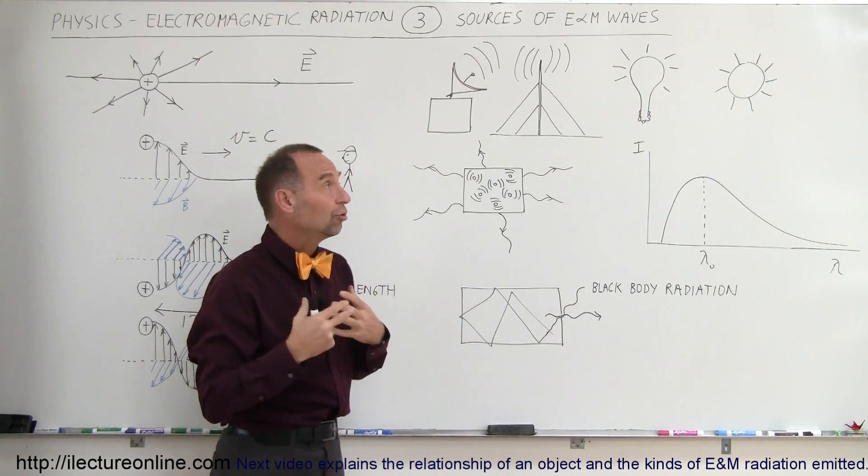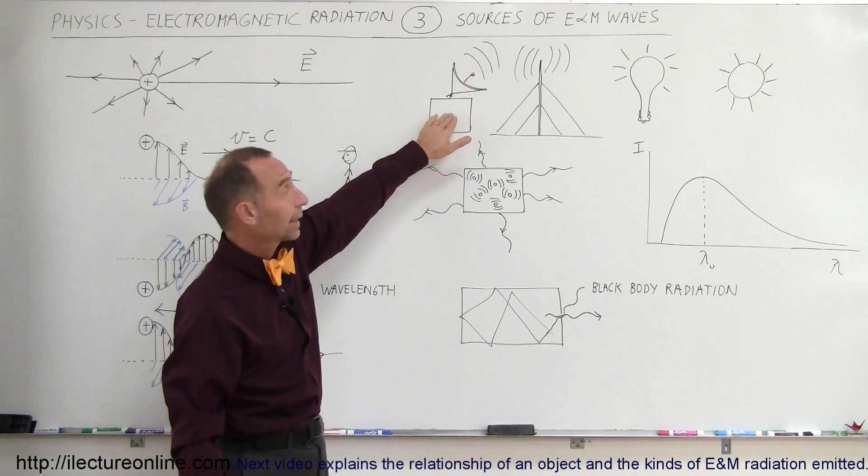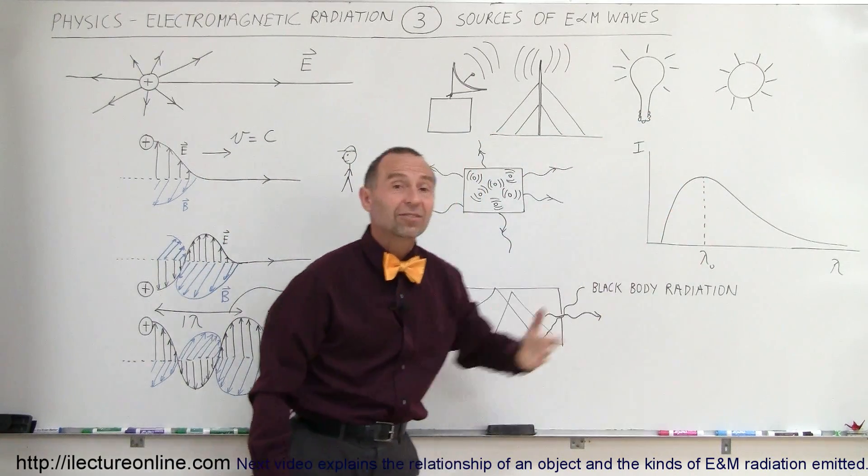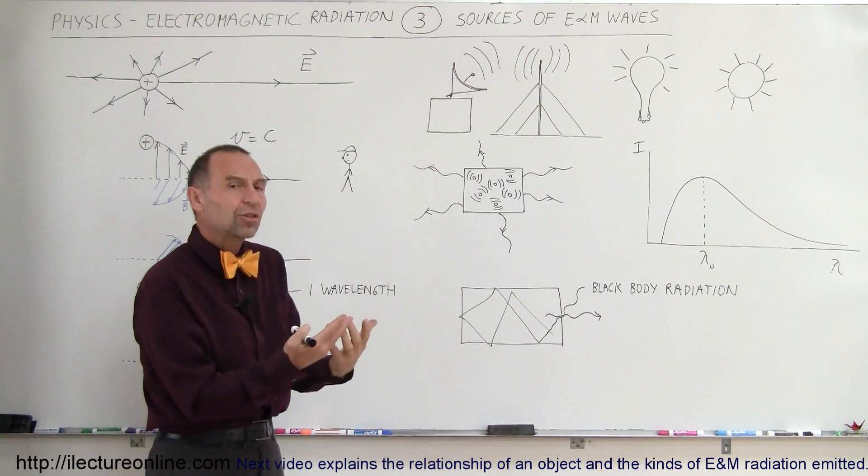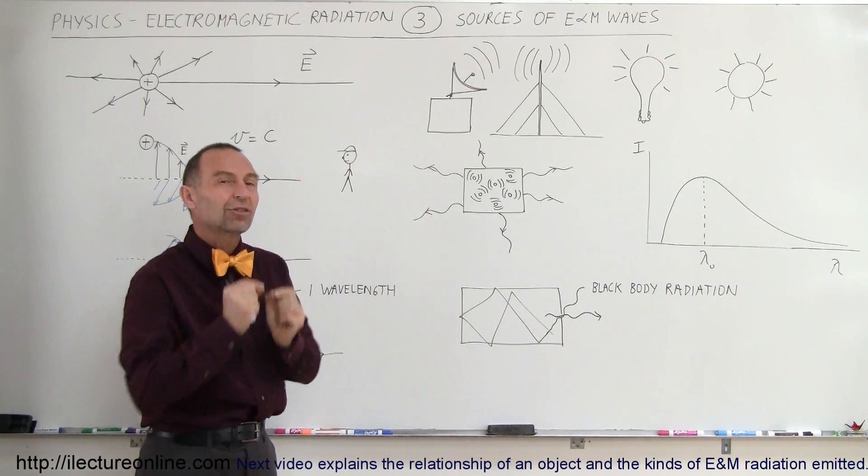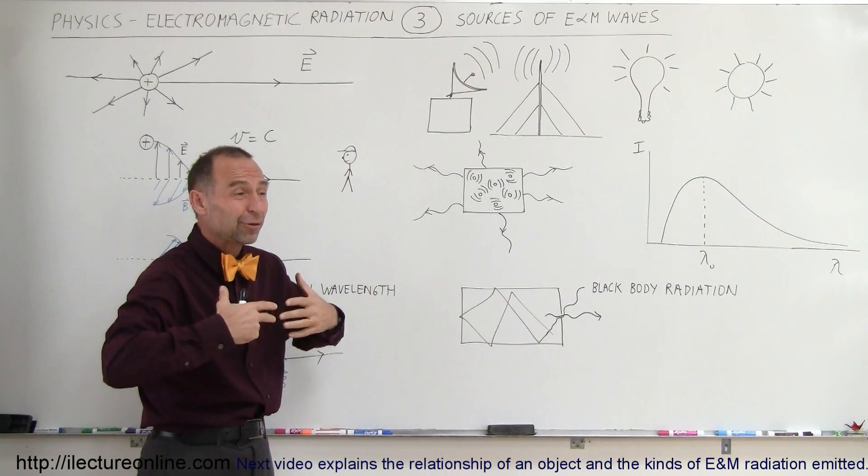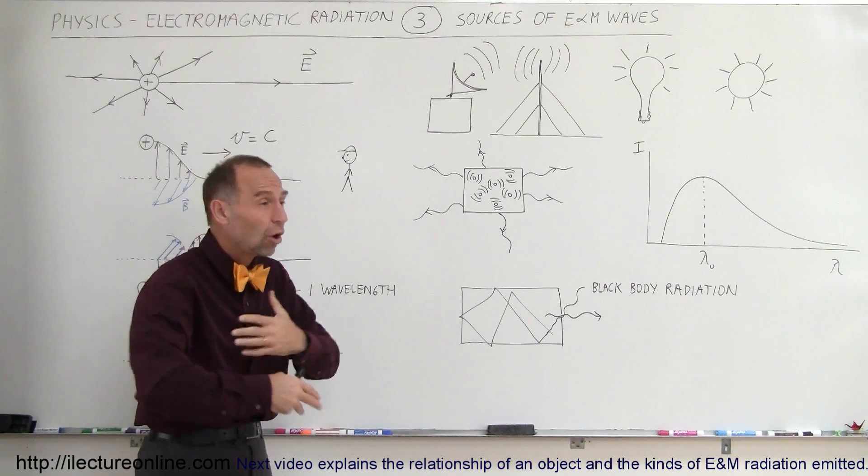So electromagnetic radiation is produced by some common things that we know like antennas, light bulbs, stars, the Sun, things like that, or any object in the universe simply because of the vibration of the atoms. So what we mean therefore is that electromagnetic radiation is all around us.